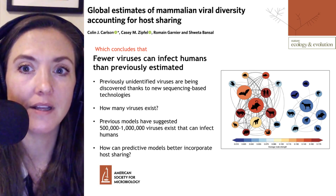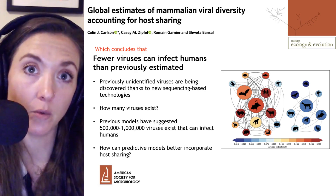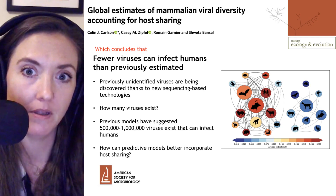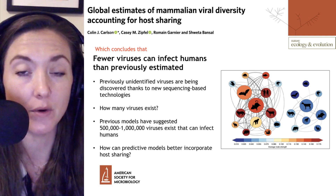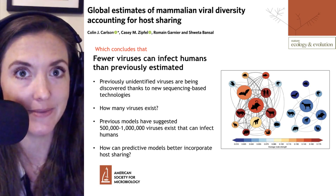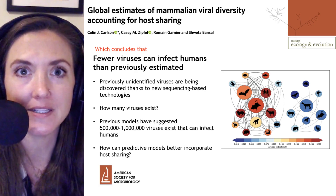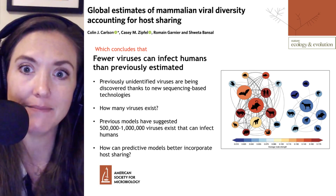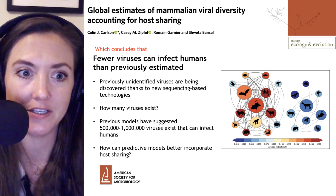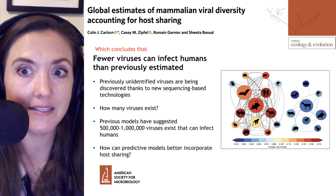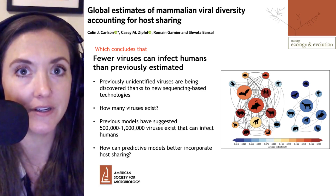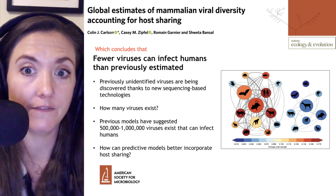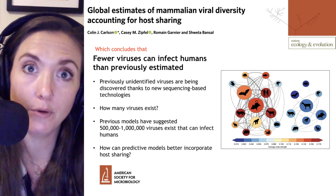A new predictive model estimates around 12,000 zoonotic viruses exist that can infect people, which is almost 98% fewer than previous estimates. Welcome to Microbial Minutes. This is ASM's update on what's hot in microbial sciences — the viruses by the numbers edition. I'm Julie Wolf, and we'll be discussing a paper published in Nature, Ecology, and Evolution, which concludes that fewer viruses can infect humans than previously estimated.